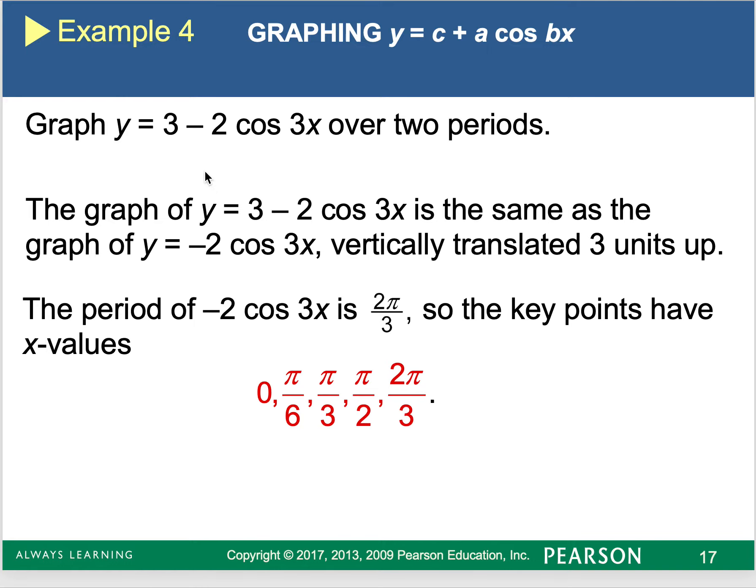So if I have this graph, y equals three minus two cosine of three x, and we're going to graph it over two periods. My period is going to be 2π over three, because it's a number in front of x. My amplitude is that number in front of cosine, so it's going to be two. It's negative, so it's going to start at the bottom of the graph, and I would divide 2π over three into four equal values.